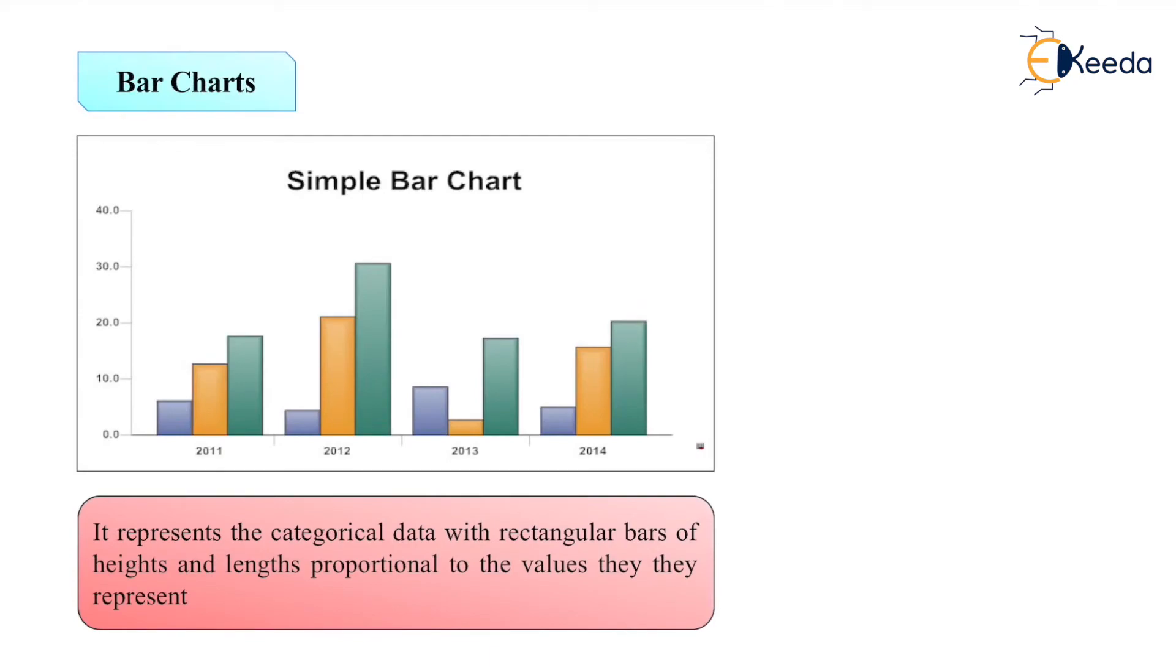Next is the basic chart. It gives a graphical representation of data, which has various types. First is bar chart. This is a simple bar chart where we can represent a year and we can represent some values. It represents categorical data with rectangular bars of height and length proportional to the values they represent.